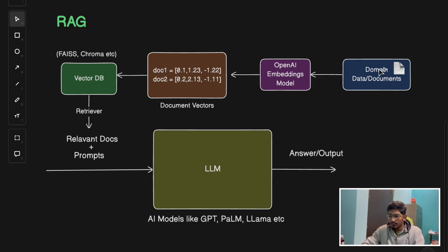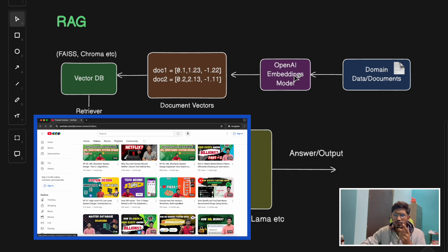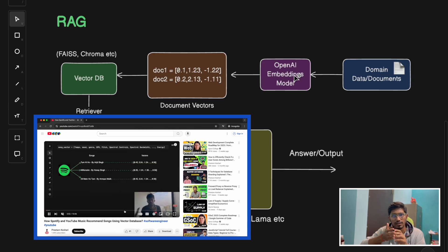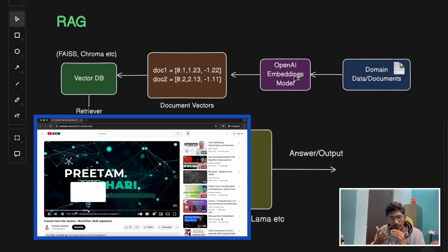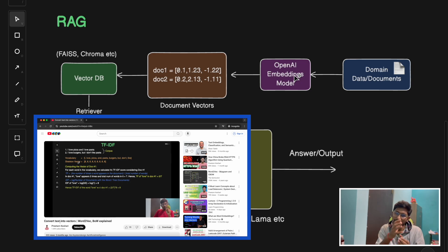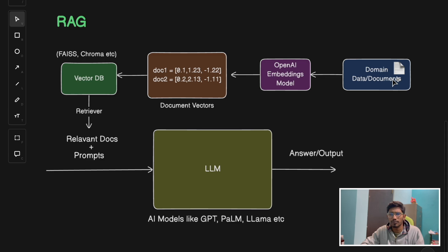If you can see here, we have some domain data or documents, which is periodically updated - meaning it's the latest data. We'll convert those documents into vectors or embeddings using an open-source embedding model. If you want to understand more about embeddings - what a vector is, how we convert text into vectors - check out the linked video where I've discussed embeddings and vectors in detail, and how we use embeddings to create vectors for different chunks of text.